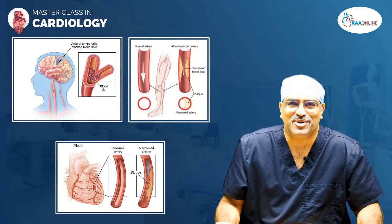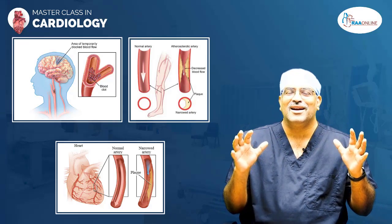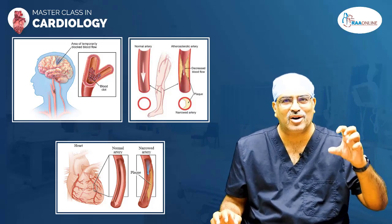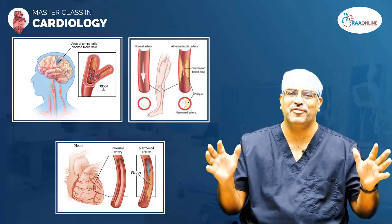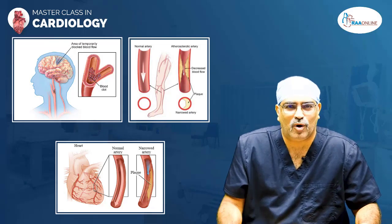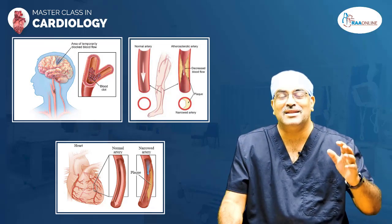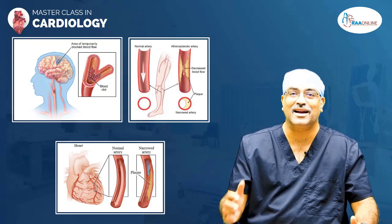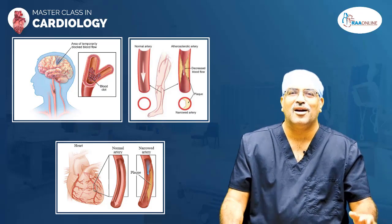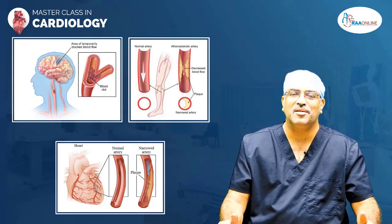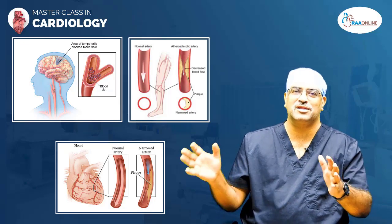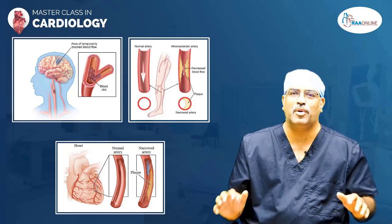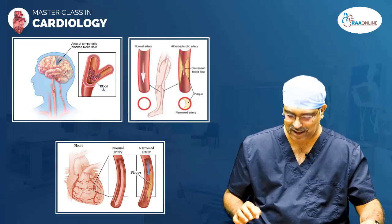Coming to the post-graduate pathway: cardiovascular disease is usually atherosclerosis, which involves the coronary artery, cerebral artery, and peripheral artery. Coronary artery involvement leads to angina and myocardial infarction. Cerebral involvement leads to transient ischemic attack and ischemic stroke. Finally, involvement of peripheral vessels may lead to claudication pain or gangrene of the distal part of the body. These disease entities form an integral part of the cardiological aspects for post-graduates.